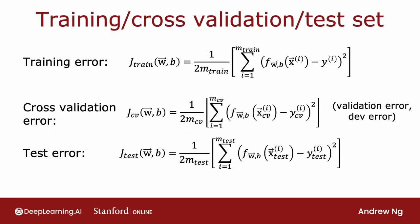Armed with these three subsets of the data—training set, cross-validation set, and test set—you can compute the training error, the cross-validation error, and the test error using these three formulas. As usual, none of these terms include the regularization term that is included in the training objective.